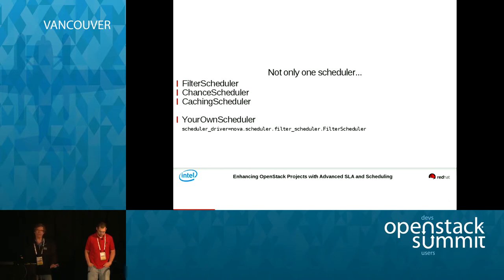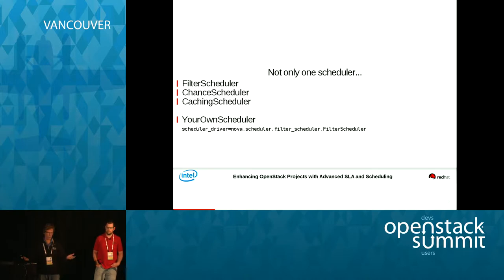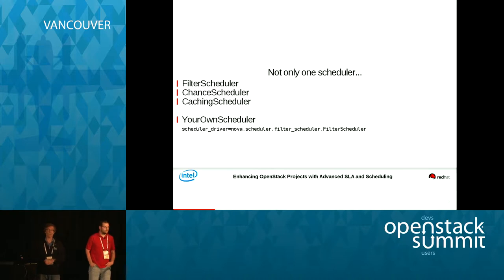Almost everything in OpenStack is a pluggable architecture — you can take a component out and plug in a different one. The same thing can be said about the scheduler. We don't have just one scheduler; we have many schedulers. The filter scheduler is what I'm going to be talking about a lot because it's the main workhorse. But we have other schedulers, like the chance scheduler — one of my favorites. It selects a host at random, and that's where it tries to start your instance. It's just completely random where it will wind up in your cloud.